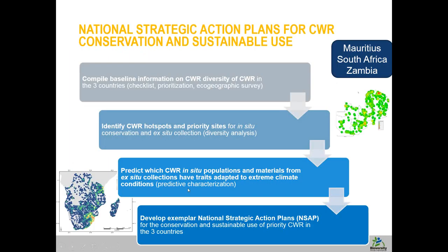The last objective was to manage this network of crop wild relative sites to maximize efficiency and sustainability at the country level. This is the process by which we developed the National Strategic Action Plan — compiling all baseline information, identifying hotspots and priority sites, predicting which in-situ populations and ex-situ materials have traits adapted to climate change through predictive characterization, and then bringing all this information together to develop the National Strategic Action Plan.